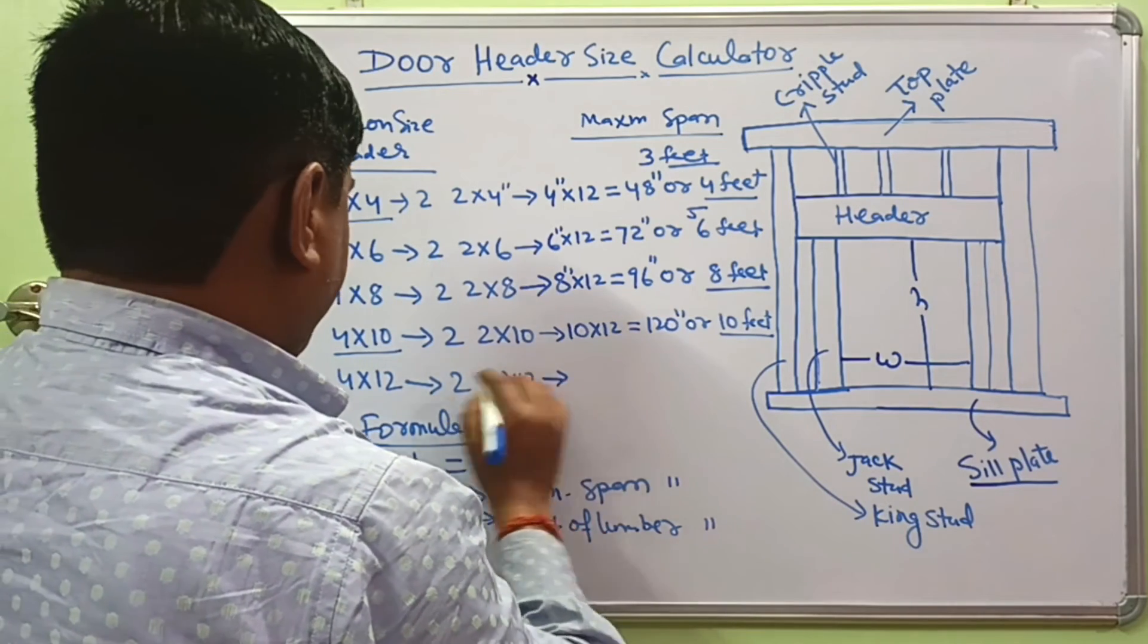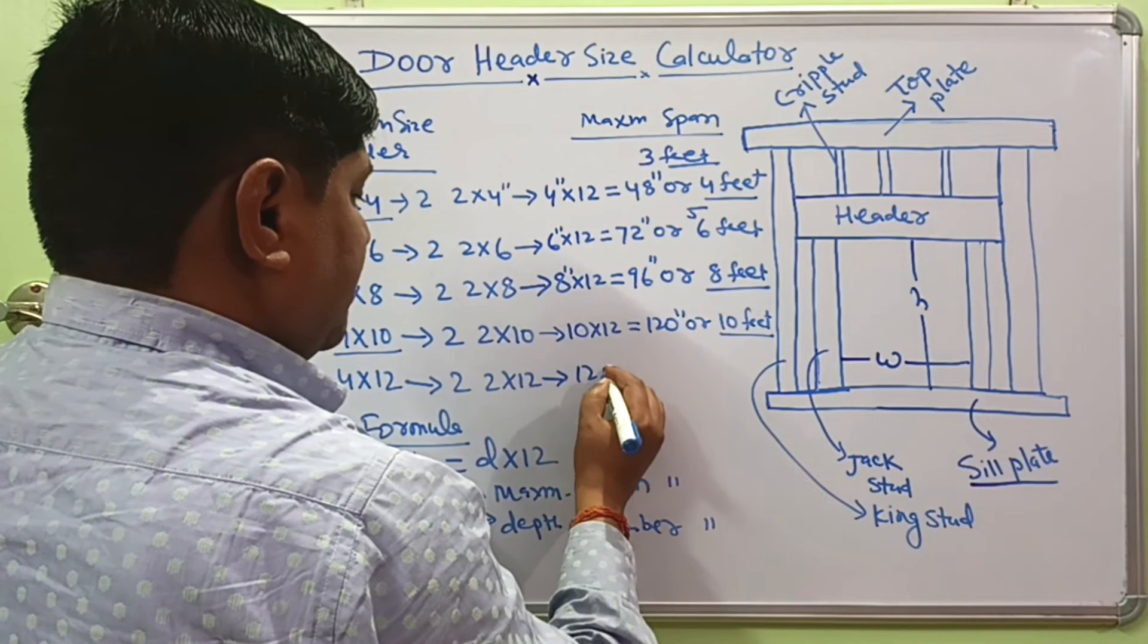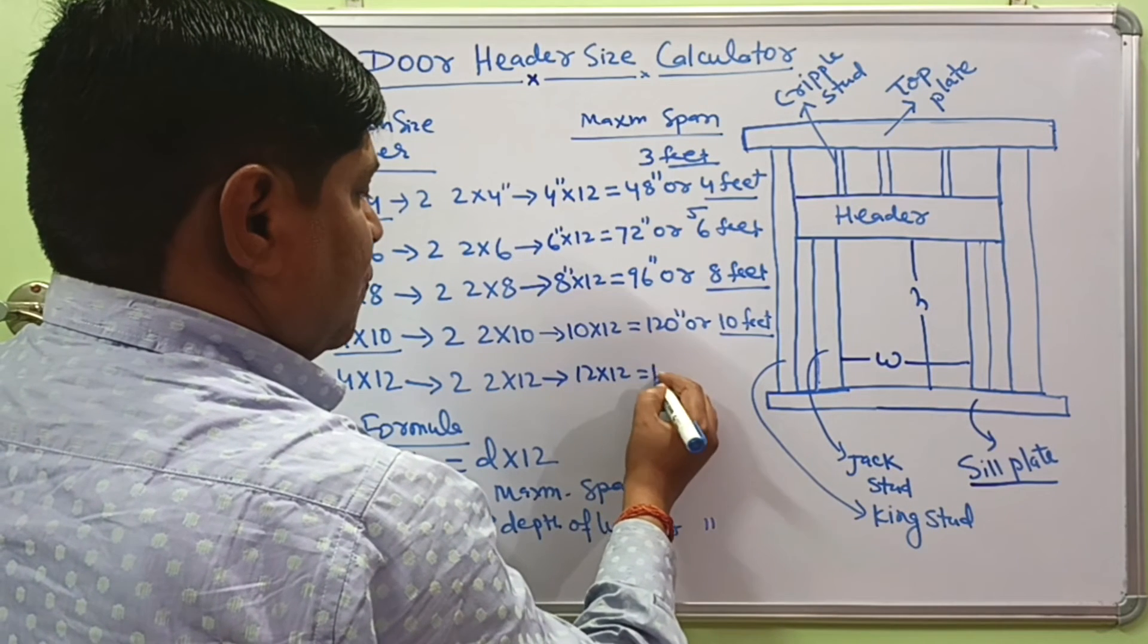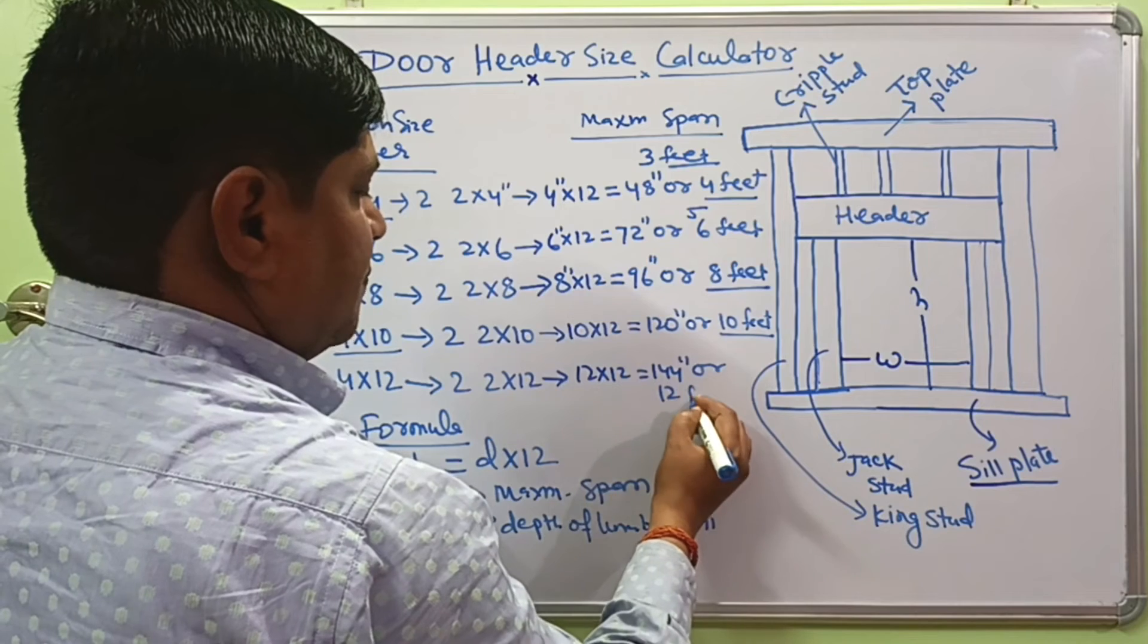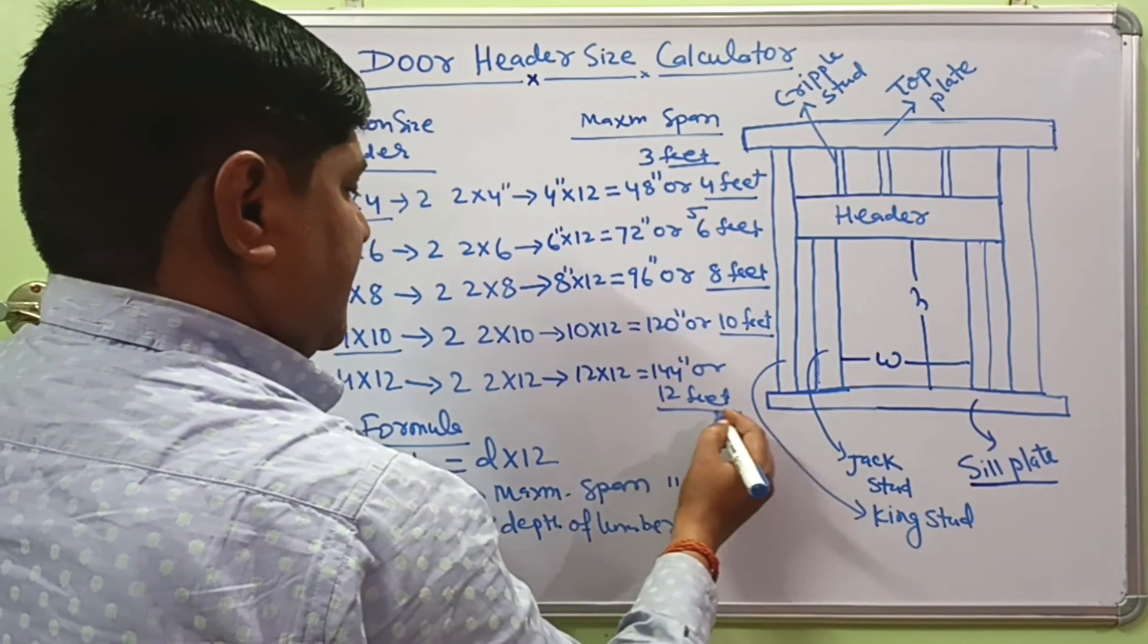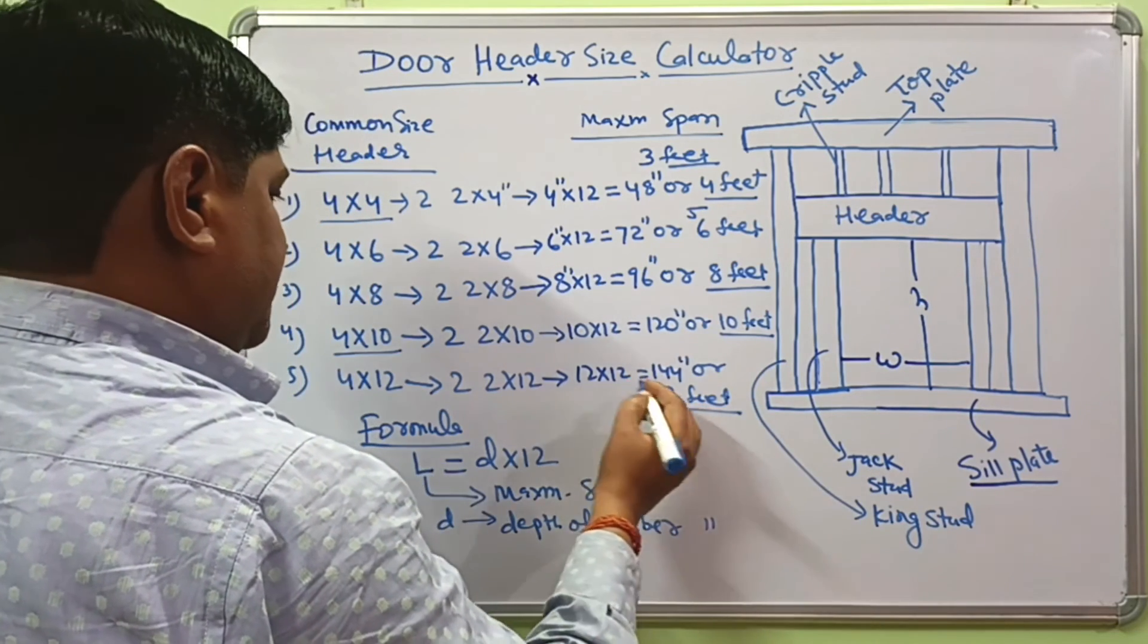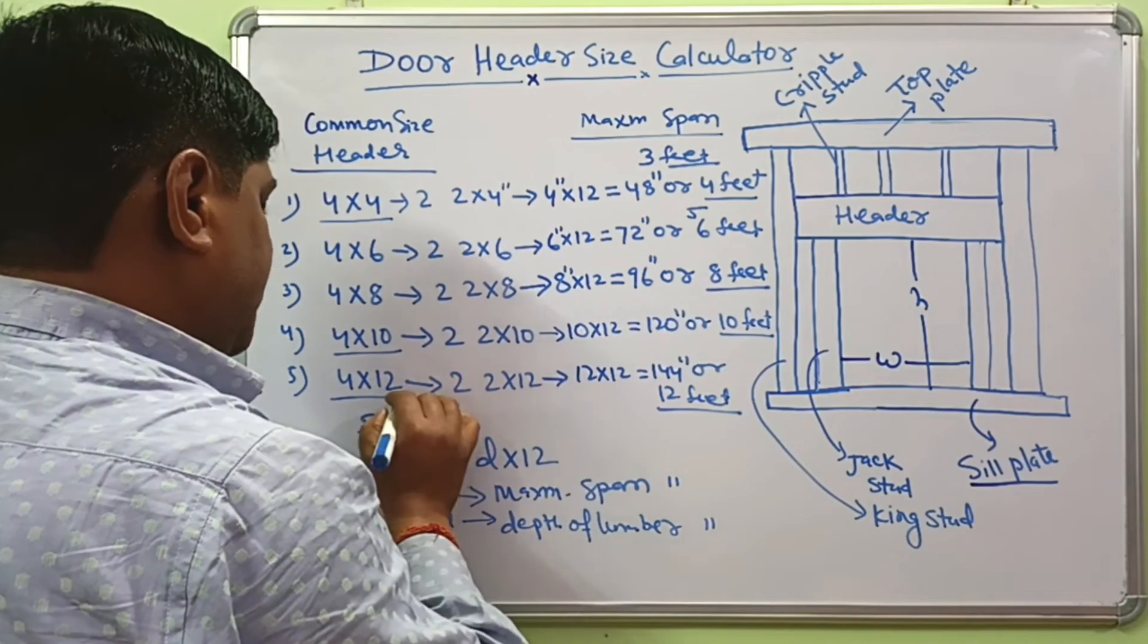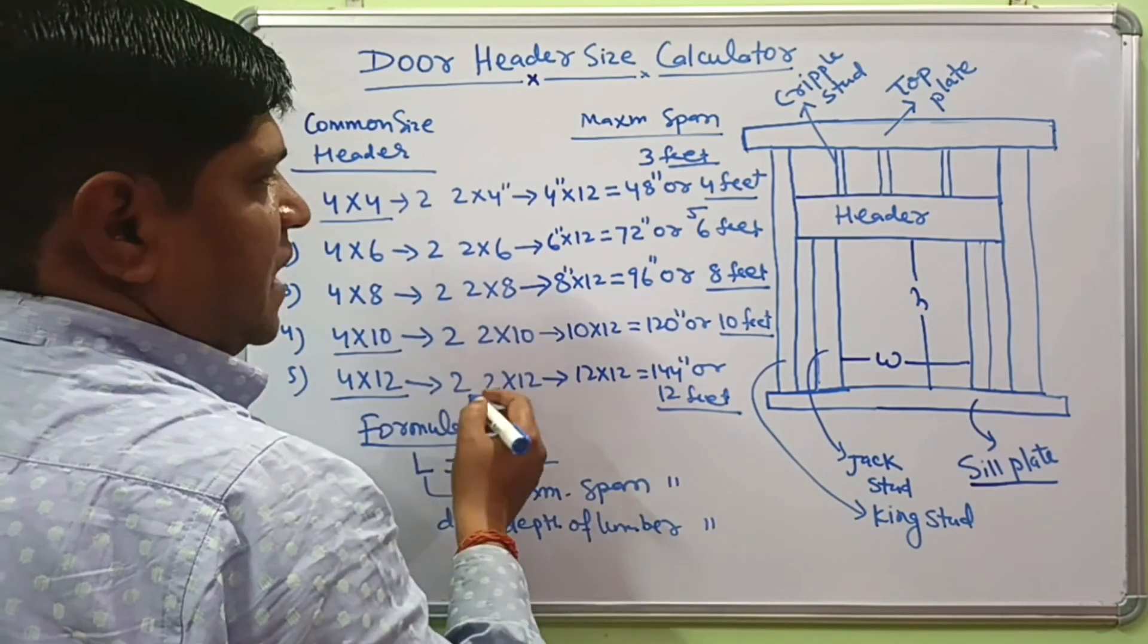And if your span is 12 times 12. This will come 144 inches or 12 feet. It means if your span is 12 foot, then you should use 4 by 12 header size.